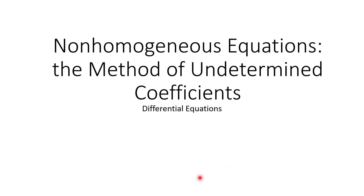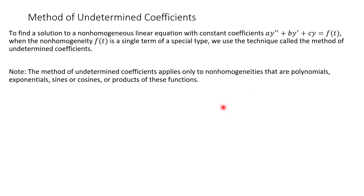Hey everybody. In this video we're going to be learning about non-homogeneous equations and we're going to talk about the method of undetermined coefficients as a way to find a particular solution. To find a solution to a non-homogeneous linear equation with constant coefficients, we have our second-order differential equation: a·y'' + b·y' + c·y. This time it equals something like f(t), whereas previously we had this equal to zero, which was a homogeneous equation.